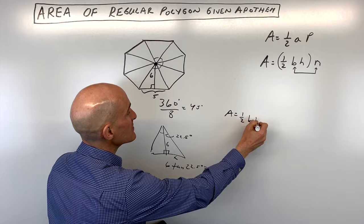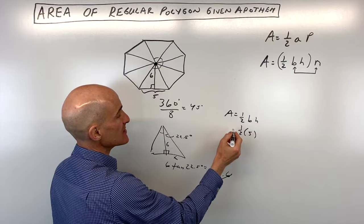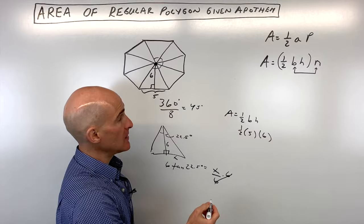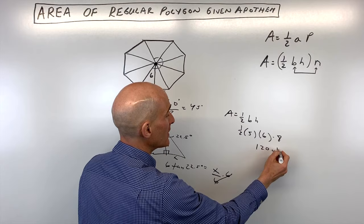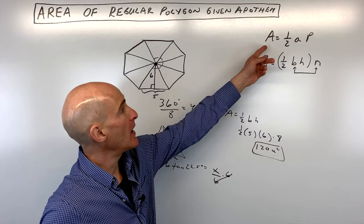So if we find the area of a triangle, remember the area of a triangle is 1 half base times height. So it's going to be 1 half. The base is 5. The height is 6. That gives us 30 times 1 half, which is 15. But we have 8 of these triangles. So if we multiply by 8, we get 120 square units.